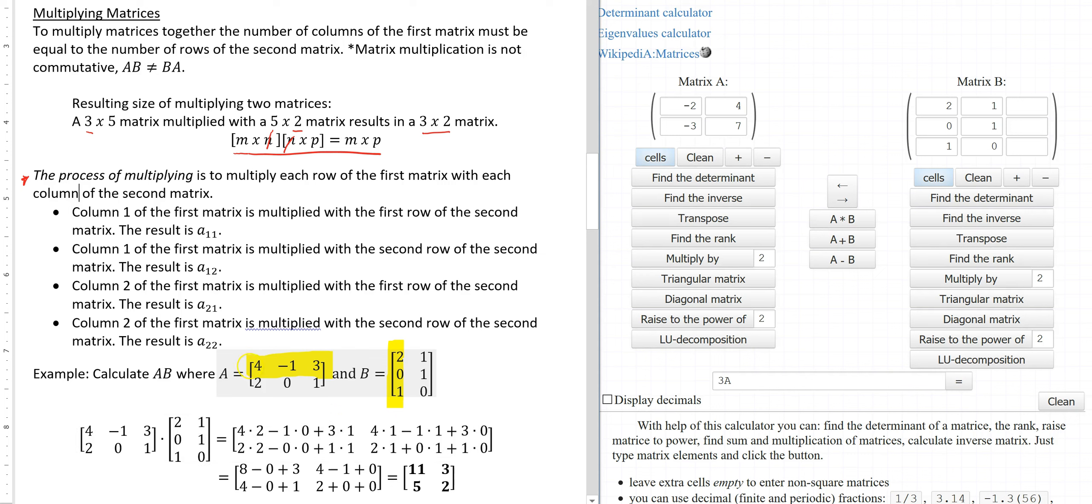After you multiply the first row with the first column then you take that same first row and multiply it with the second column. After that you take the second row multiply it with the first column and then take the second row and multiply it with the second column.